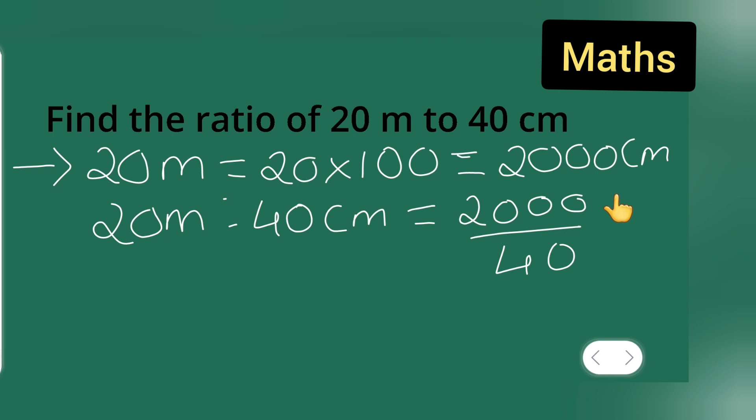Now what y'all going to get is cancel this 00. So here what I'll have to cancel, here 00 will get cancel, then 4 ones are 4, 4 fives are 20, and this 0 write it as it is. Next, what will be your answer? 50 upon 1.